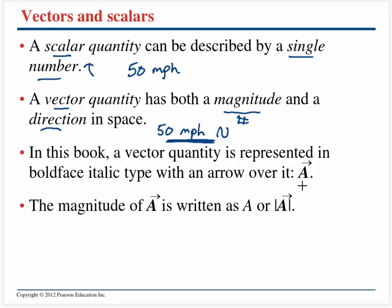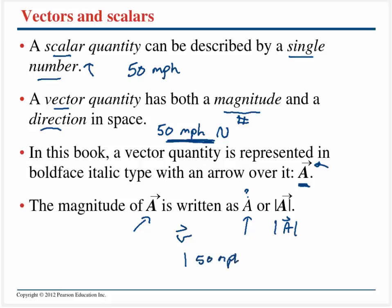Vectors in the book are going to be written both bold, as well as with a little arrow right on top of them. When we write the magnitude — the number associated with a vector — it's not going to have the arrow or the bold, and it may very often be written with absolute value bars across it. So the magnitude of A might be written as |A| = 50 miles per hour.